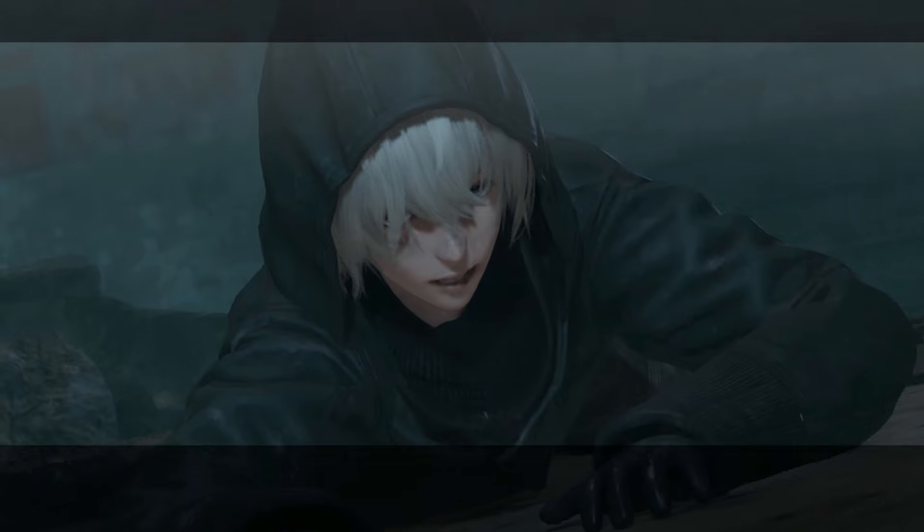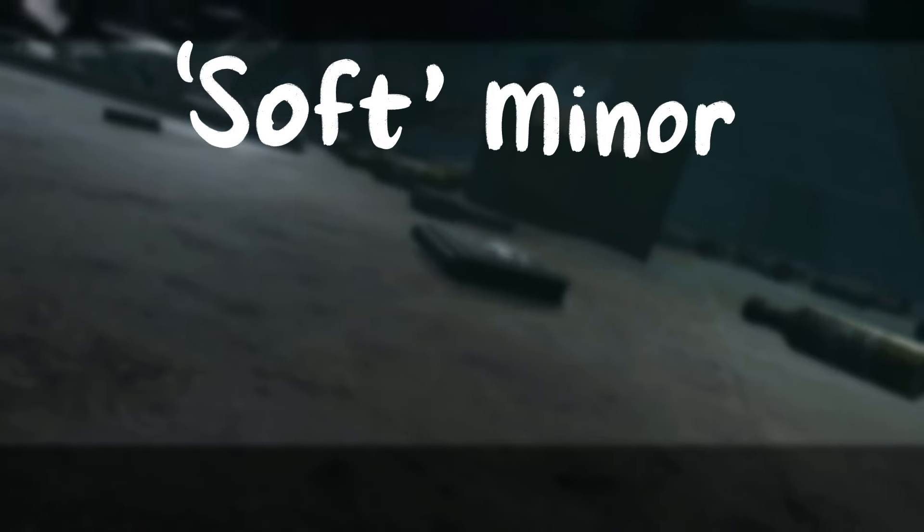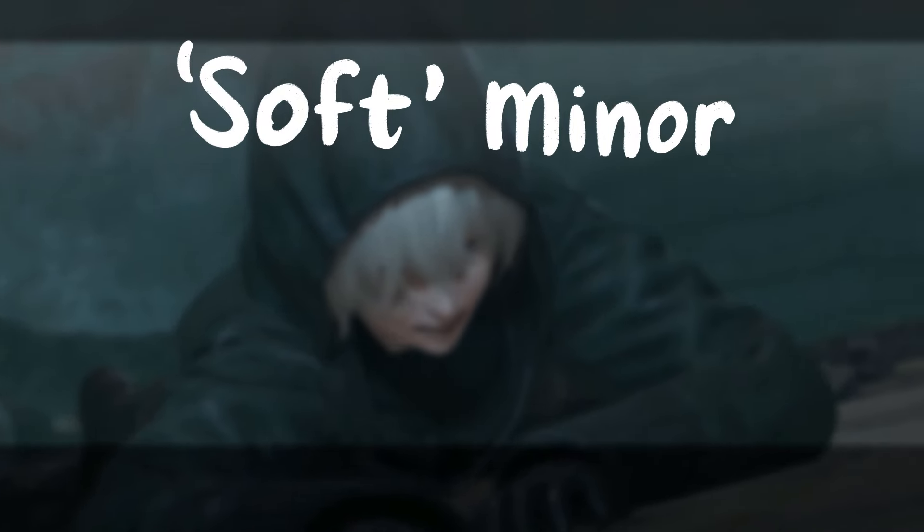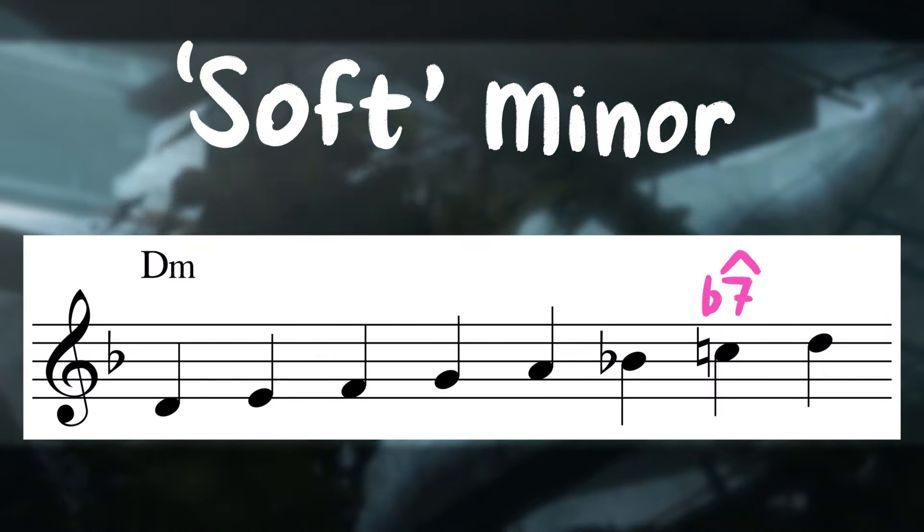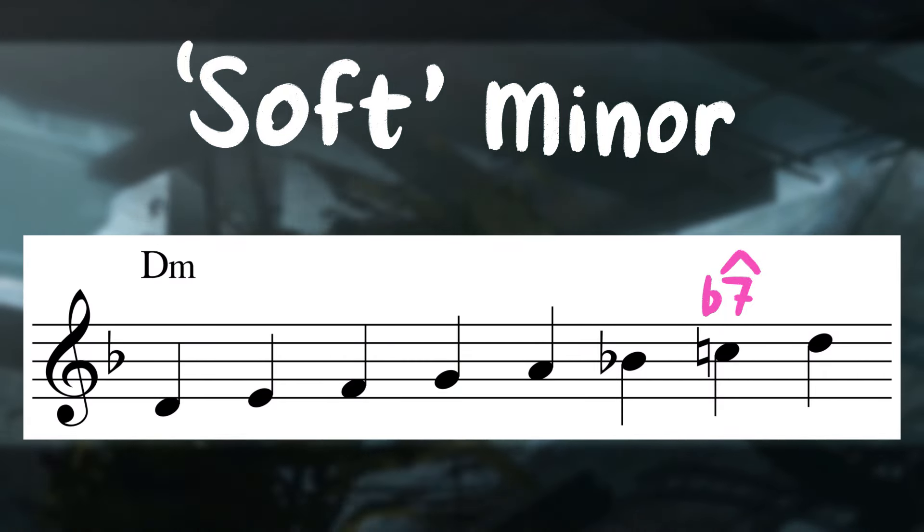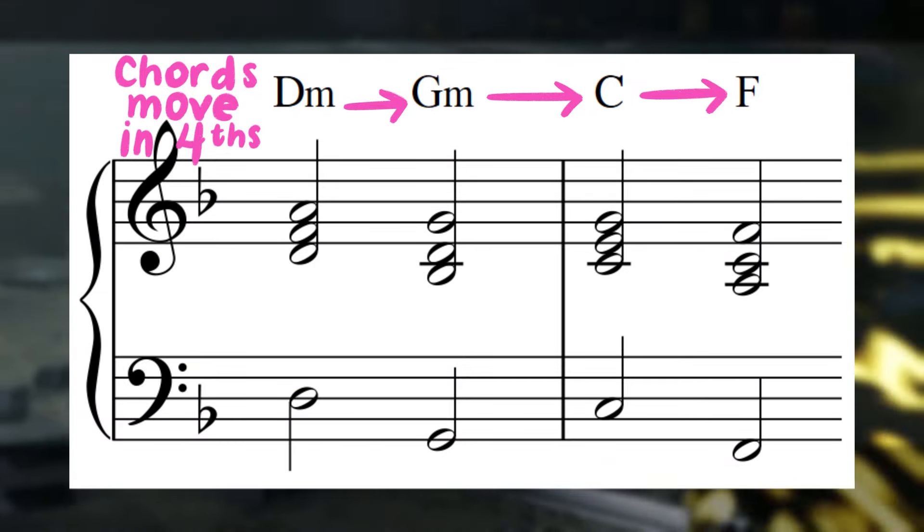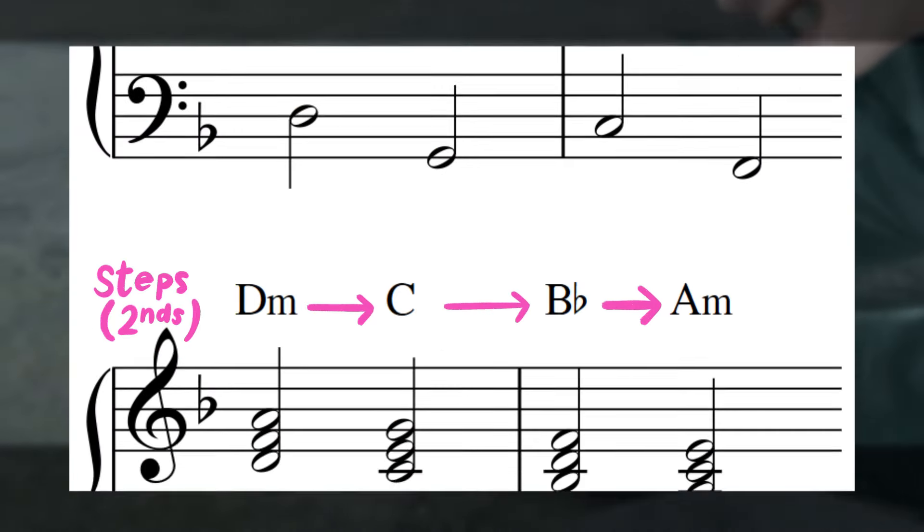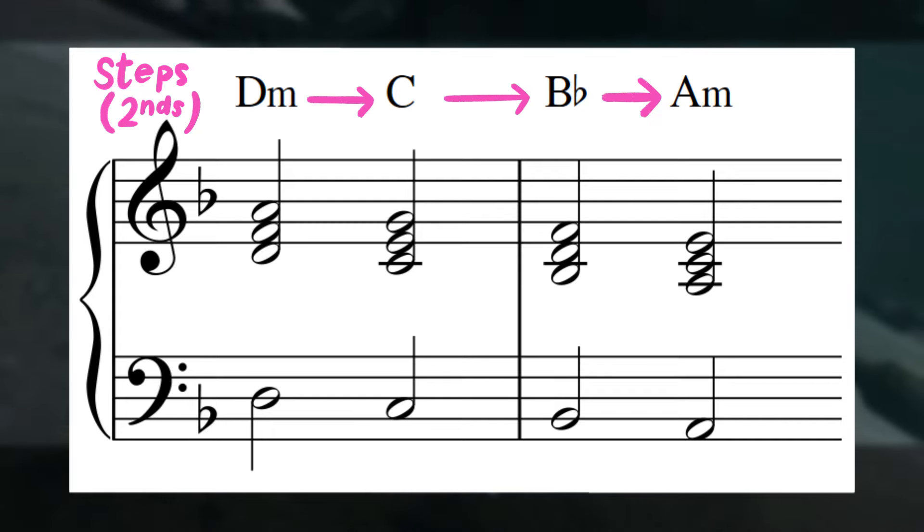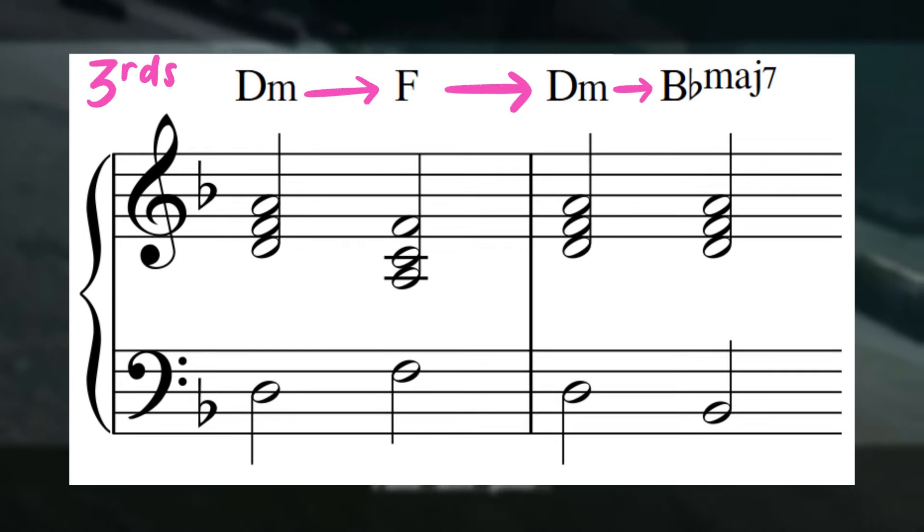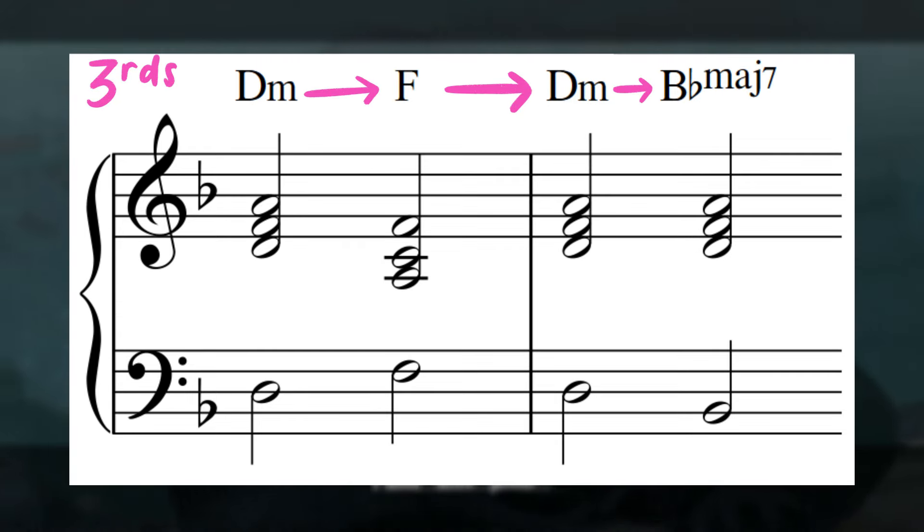The other type of minor key sound that Nier uses is what I call a soft minor sound. This is characterized by the lack of the raised seventh leading tone of the key and generally using weaker harmonic motion. In general, chords that move by fourths or fifths create a lot of movement, chords that move by step create a little less movement, and chords that move by a third generate almost no harmonic movement at all.